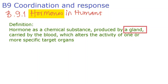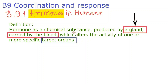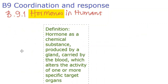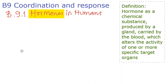First, hormones are chemical substances produced by a gland. Secondly, they are carried by the blood — blood is the mode of transportation of hormones from the glands to the target organs. Thirdly, these hormones alter the activity of one or more target organs.